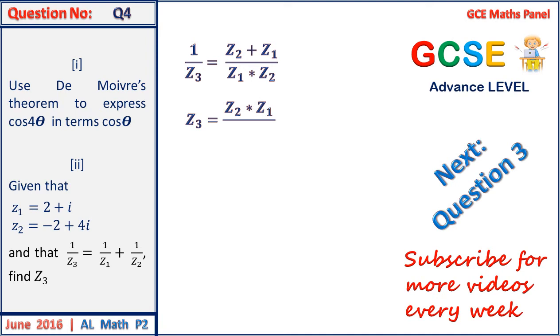We now put in the values and simplify, and our simplification after that is done will give us a value of (2 + i)(−2 + 4i) in the numerator, all that on (2 + i + (−2 + 4i)) which equals (−8 + 6i)/5i.